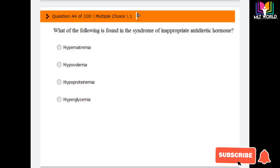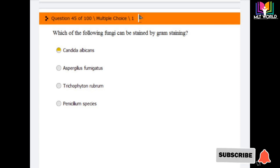Question number 44: Which of the following is found in the syndrome of inappropriate antidiuretic hormone ADH? Options are hypernatremia, hypovolemia, hypoproteinemia, and hyperglycemia. The answer is hyperglycemia. Inappropriate antidiuretic hormone is sometimes related to diabetes insipidus, so hyperglycemia is related. Last option is the correct answer.